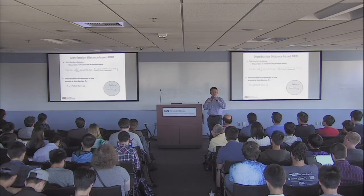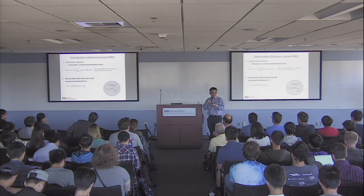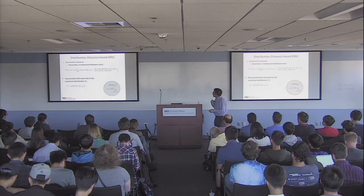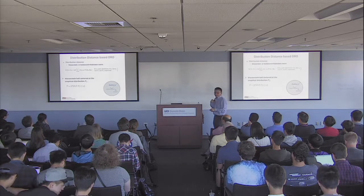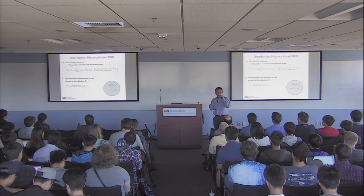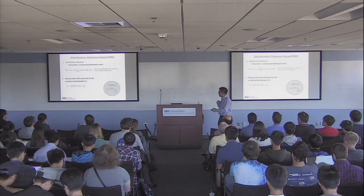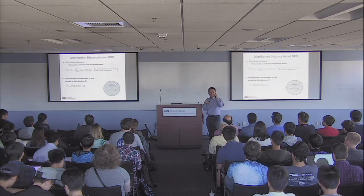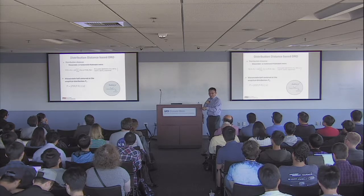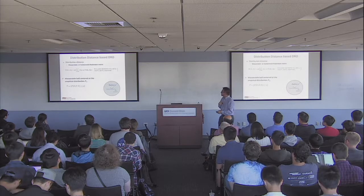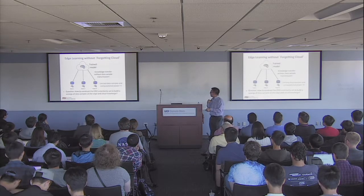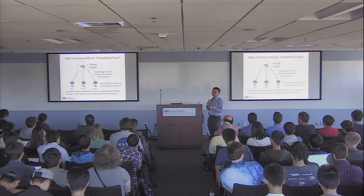This metric has a beautiful geometric structure — like in Euclidean space where you pick a point, choose a radius, and draw a ball around it. Coming back to the edge learning problem: edge devices have limited data samples and limited computational power, so by themselves they cannot run intensive computation. How can they get edge intelligence in real time? We want to leverage what we learn in the cloud — the cloud has a lot of computational power and a lot of data.